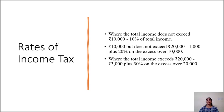Where the total income exceeds rupees 20,000, the tax is rupees 3,000 plus 30% on the excess over 20,000. Note: if the total income of a cooperative society includes long-term capital gains, the tax on long-term capital gains will be computed at the rate of 20% prescribed under Section 112.